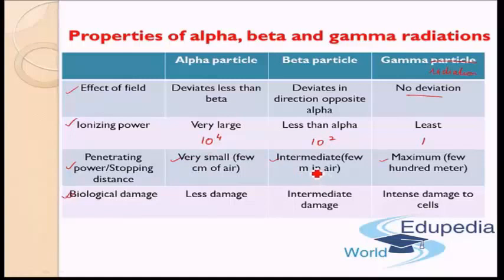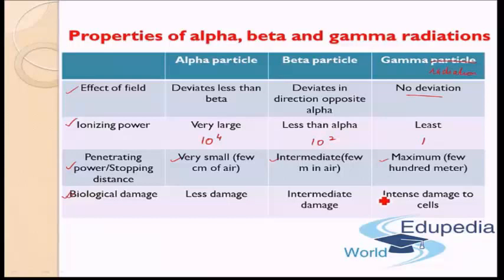Beta particles, since they have intermediate stopping power, produce intermediate damage to the biological tissues — more damage than alpha particles, less damage than gamma radiation. Finally, gamma radiations are very very high energy radiations. They penetrate practically throughout your body — they can enter from one end and pass through the other end. So they are really bad when exposed to a human body and can cause extensive damage to cells, tissues, and human organs. Therefore extra care needs to be taken in order to avoid gamma radiation exposure.